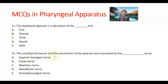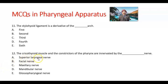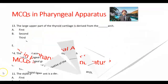Question number 12. The cricothyroid muscles and the constrictors of the pharynx are innervated by which nerve? Options: superior laryngeal nerve, facial nerve, maxillary nerve, mandibular nerve, glossopharyngeal nerve. The cricothyroid is innervated by the superior laryngeal branch of the vagus nerve. The answer is A.